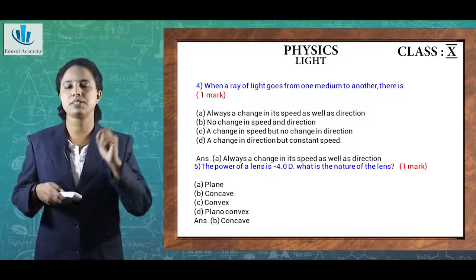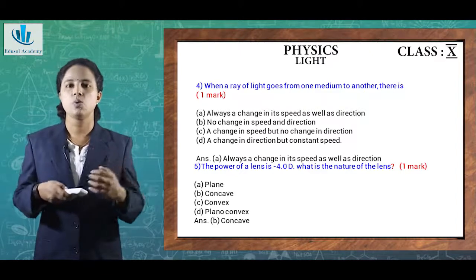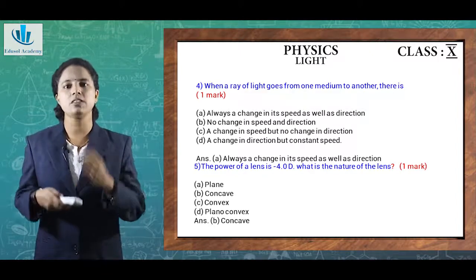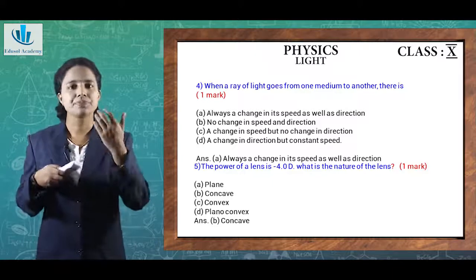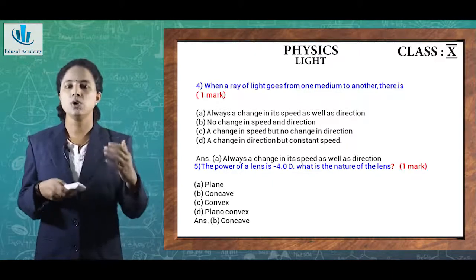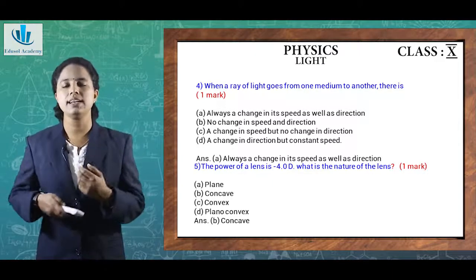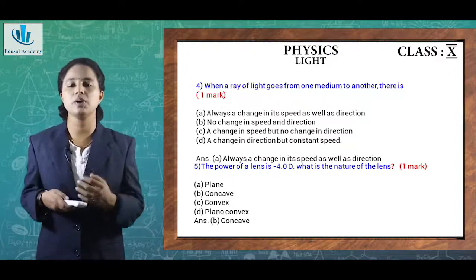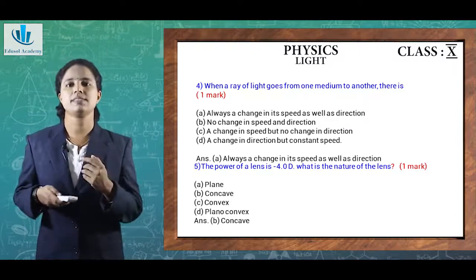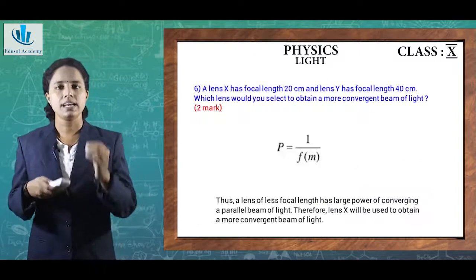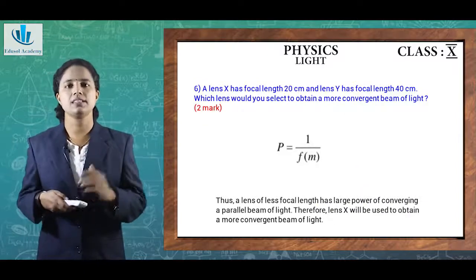Next question: the power of a lens is minus 4 diopter. What is the nature of the lens? Since the power has a minus sign, this corresponds to a concave lens.